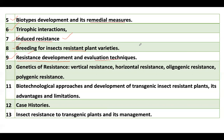The genetics of resistance involves types of resistance associated with genes. There is vertical resistance and horizontal resistance, oligogenic resistance and polygenic resistance. As the name implies, oligogenic resistance is the resistance of a cultivar due to a few genes, while polygenic resistance is the resistance of a cultivar due to many genes.